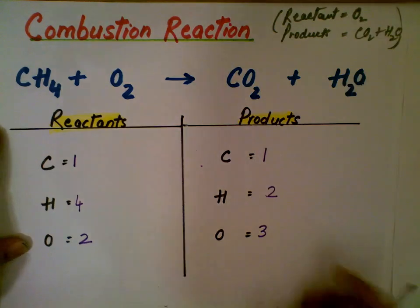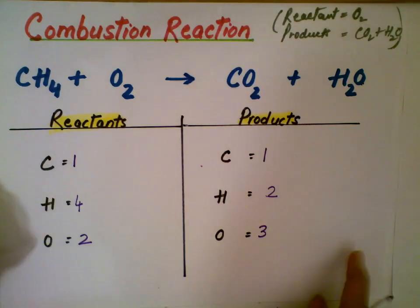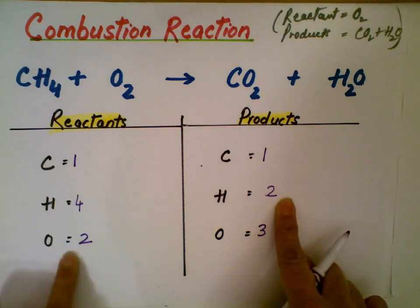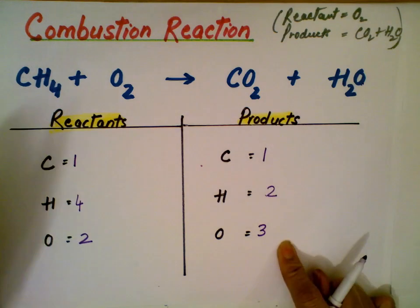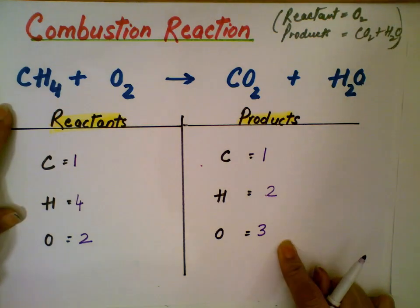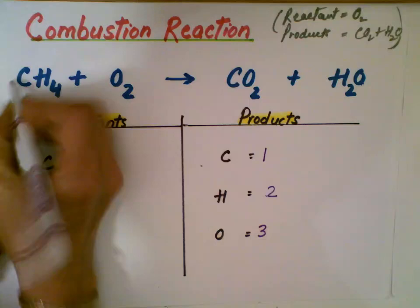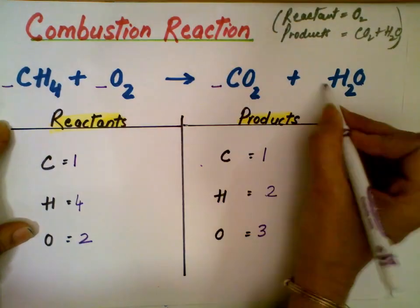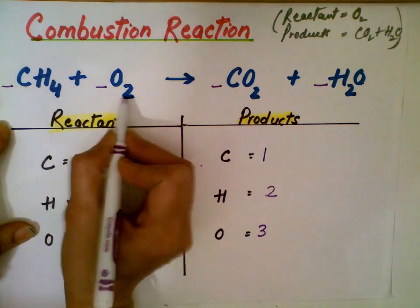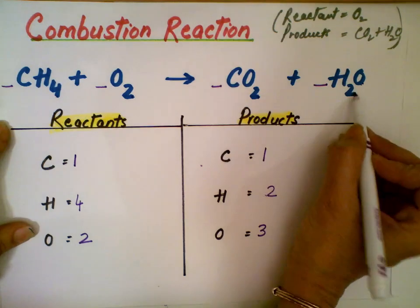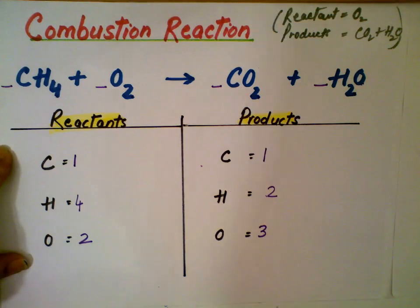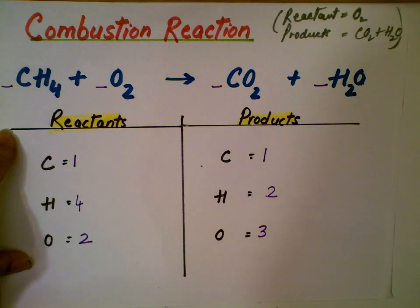Now we have to balance this because it is not balanced — each atom has to be balanced for every element. Carbon is 1 on both sides, hydrogen is 4 versus 2, and oxygen is 2 versus 3. To balance, we adjust only the coefficients — the numbers that go in front of the formula. We never touch the subscripts, because adjusting subscripts would change our original substance. We just want to balance the number of atoms on each side.